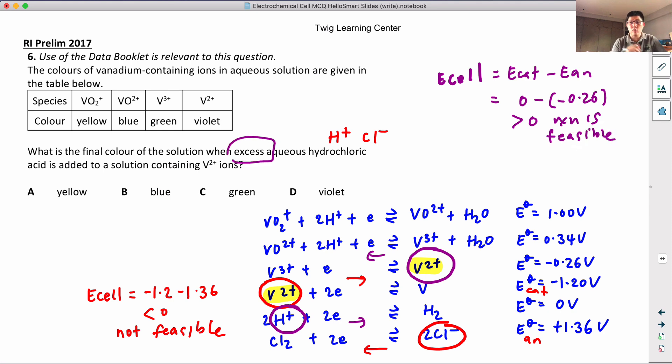But the question says you have excess. So if excess H+, after producing V3+, 2+ become V3+, we can consider one more part, which is V3+ and H+.